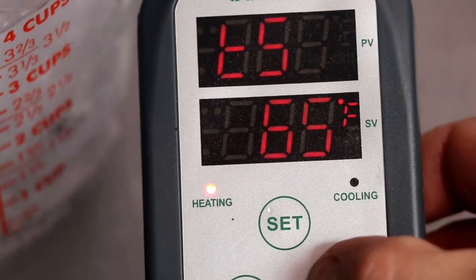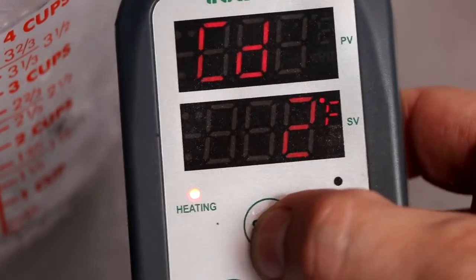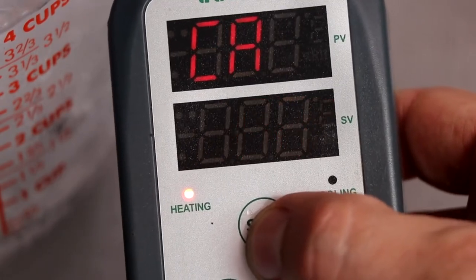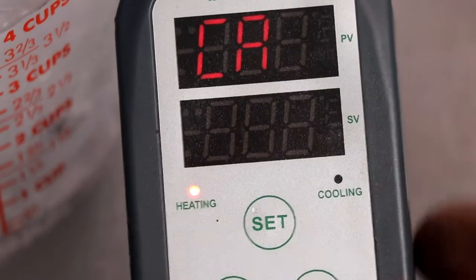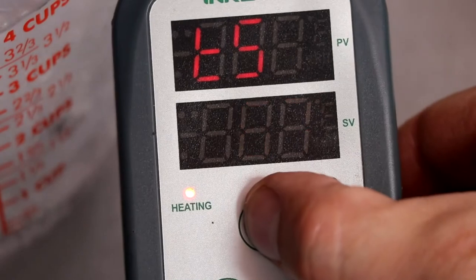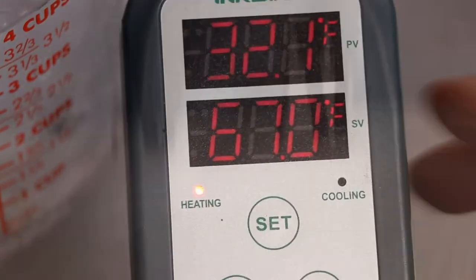If you do need to calibrate it, hold that Set button for three seconds, scroll through the menu options until you get to the CA option, which is the Calibrate option, and then you can go ahead and adjust up or down depending on where you want your actual temperature to be. In this case, I'm going to leave it exactly where it's at, go ahead and set it back, and put it back in my chamber.